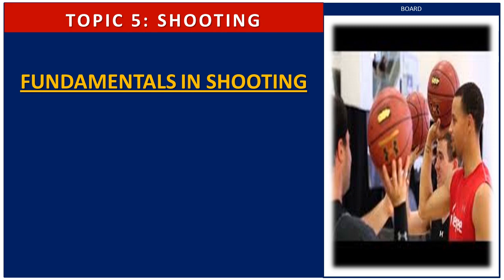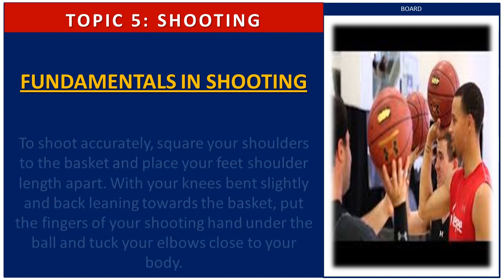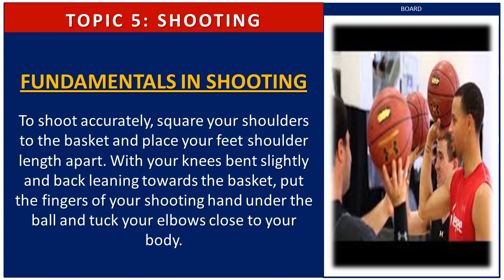Here are the fundamentals in shooting. To shoot accurately, square your shoulders to the basket and place your feet shoulder-width apart. With your knees bent slightly and back leaning toward the basket, put the fingers of your shooting hand under the ball and tuck your elbows close to your body. Flick your wrist toward the hoop to release the shot, and your index finger should follow through facing the basket after releasing the ball.